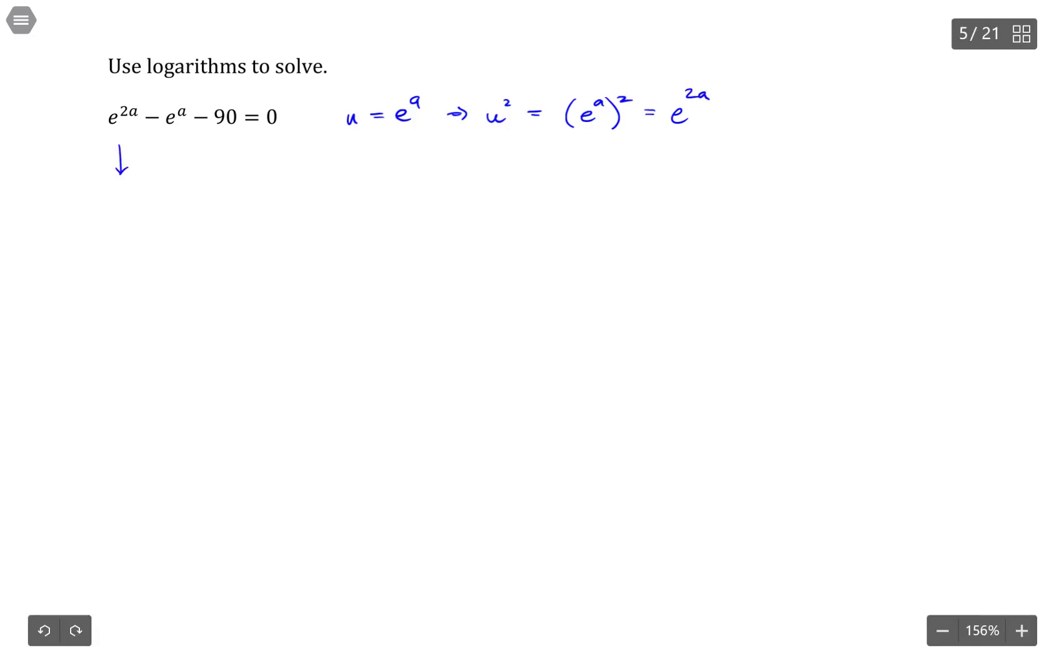And what that means is I can transform this into a quadratic, so u squared minus u minus 90 equals 0.